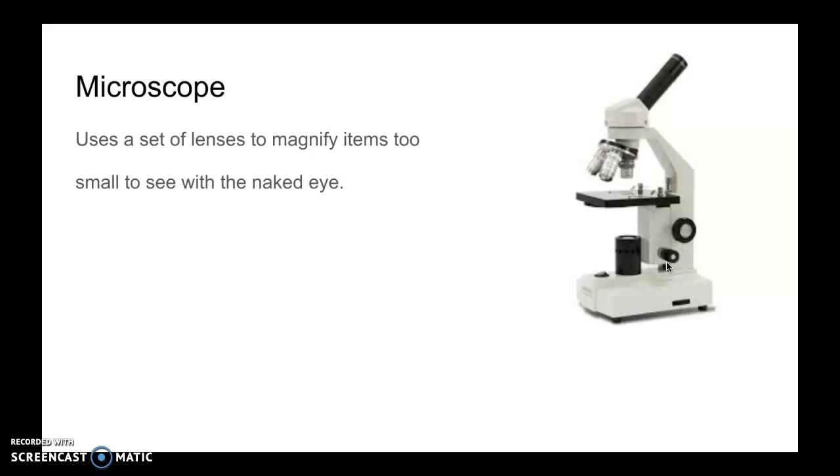A microscope is also used to magnify objects. The hand lens does magnification as well. A microscope has many lenses. These are called objective lenses and then there's another one up here. These are much more powerful than a hand lens. They allow you to see things that are even smaller than a hand lens would allow.